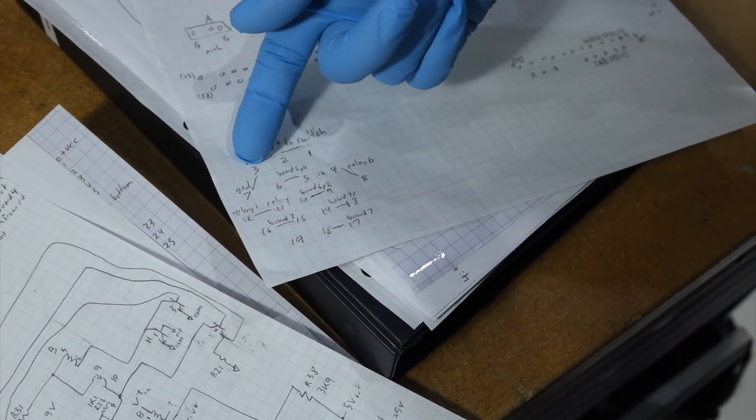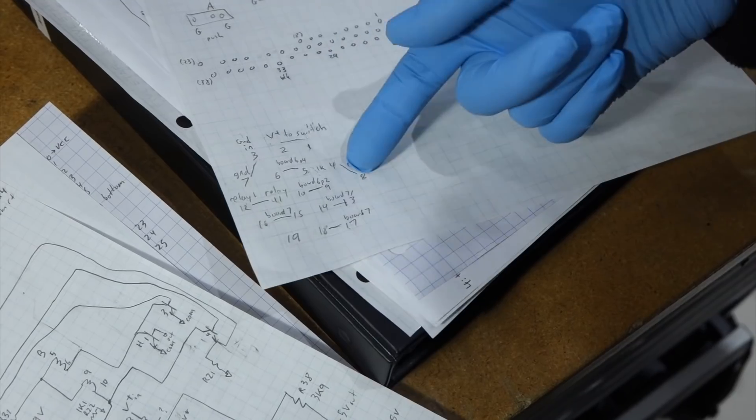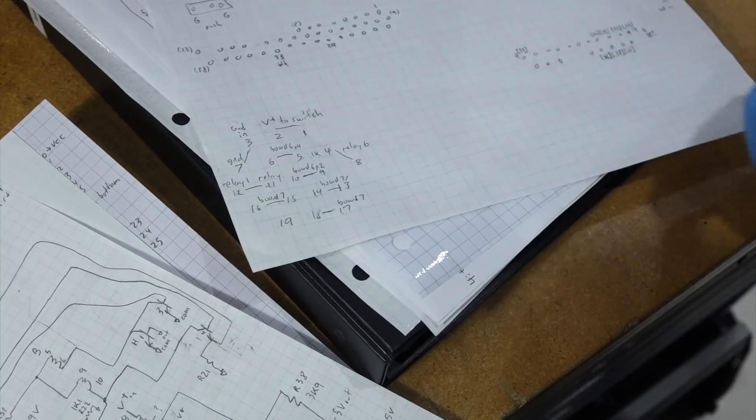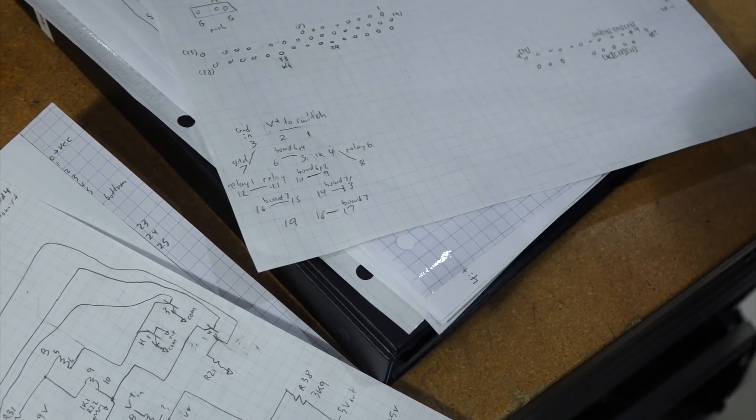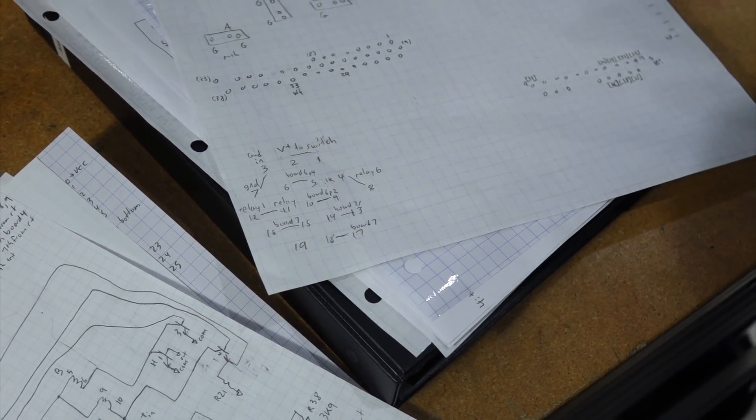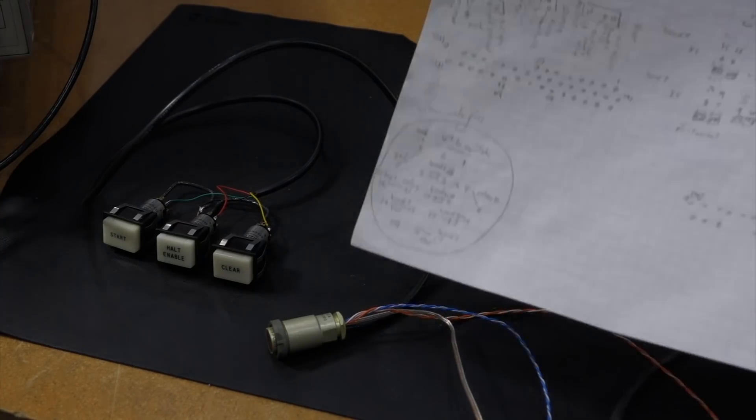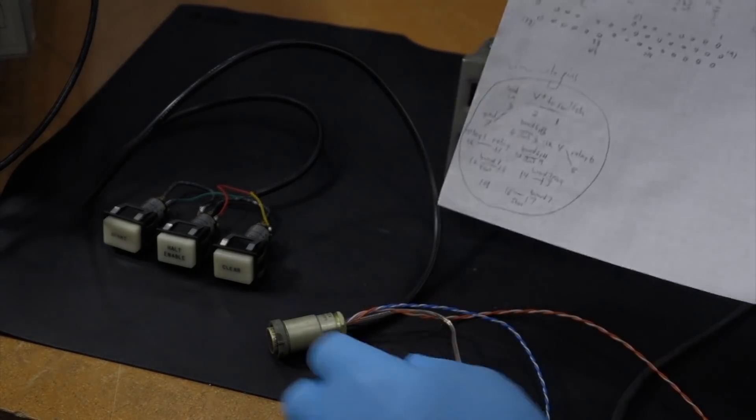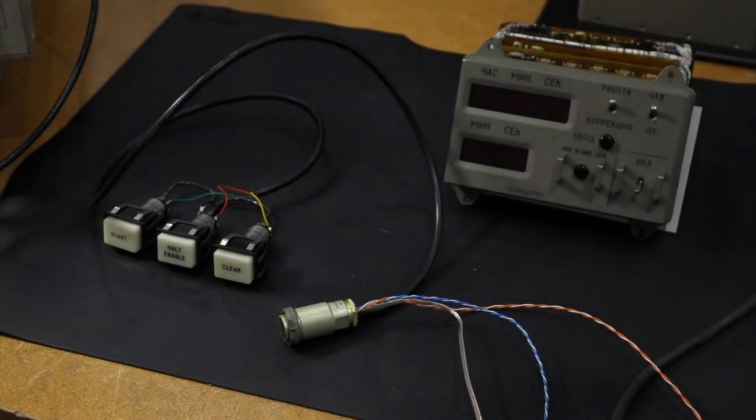You've got your power and ground, you've got your two relay contacts, and then you have signals that are going to the isolation transformers, probably the input and output signal.